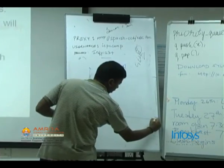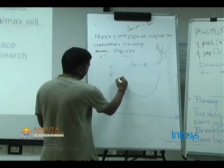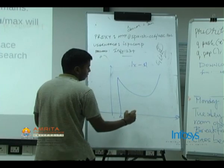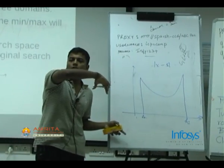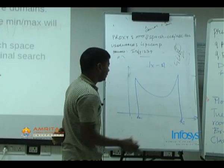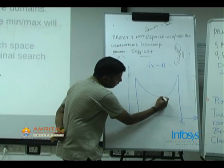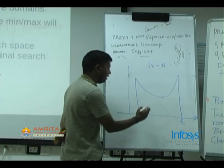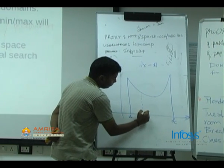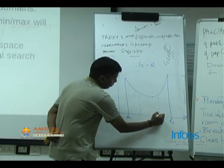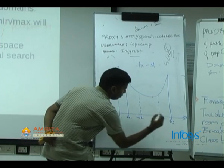Consider performing ternary search on a curve with a known minimum between positions low and high. Assuming the function is continuous, we want to find the value where it attains its minimum. We divide the segment in a 1:2 ratio, defining two pointers: mid1 at one-third and mid2 at two-thirds of the interval.